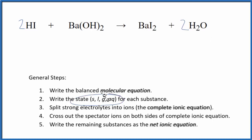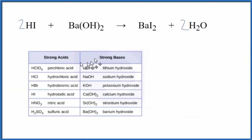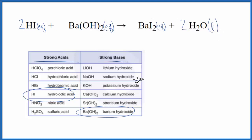Now we write the state for each substance. This is a helpful table, one you might want to memorize. As we look at it, we have the strong acids, the common strong acids and strong bases. HI is considered a strong acid. So we're going to put an aq. It's a strong electrolyte. It'll dissociate into its ions. Barium hydroxide is a strong base. Again, aq. It's a strong electrolyte. Compounds with iodine, very soluble. And then water, that is a liquid. So we have the states for each substance.